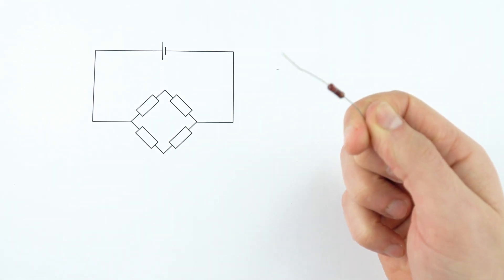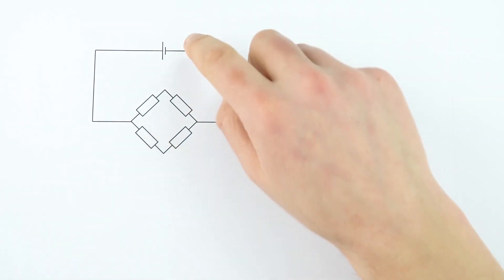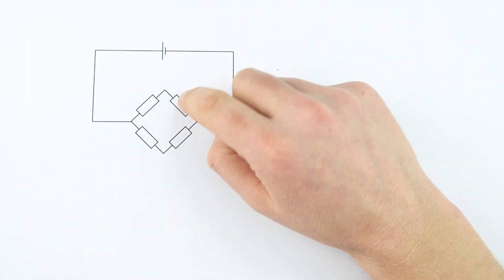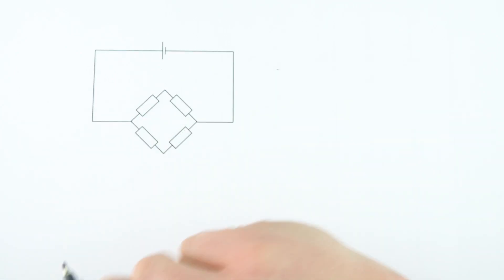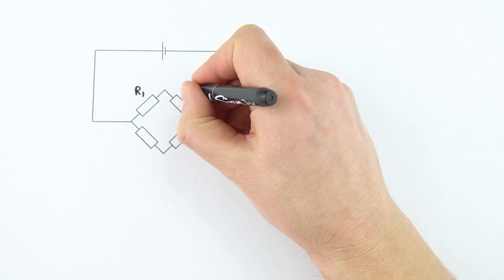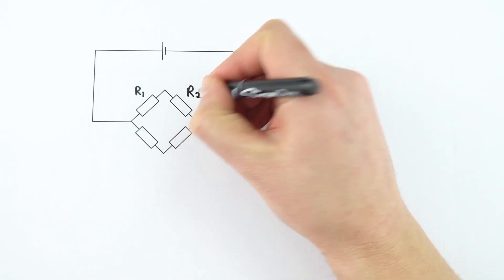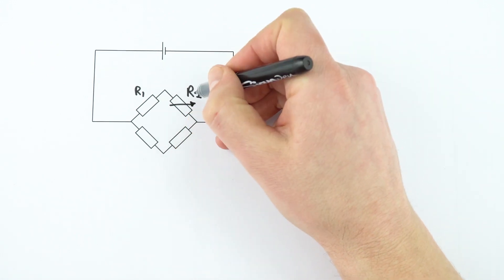The whole point in this circuit is that we can find out the value of an unknown resistor. Very simply, we've got a power supply here, and what we have are four resistors connected like this. I'm just going to label this one as R1. We've got R2 over here, and this one is going to be a variable resistor, so we can alter the size of that resistance.